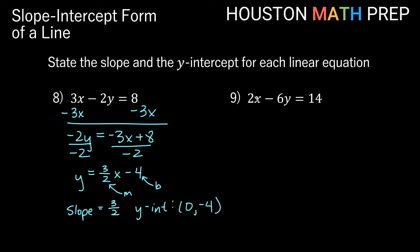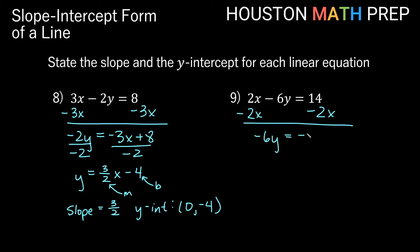For our last one: 2x minus 6y equals 14. Again, not in y equals mx plus b form, so we subtract 2x to the other side. That gives us an x term on the right: negative 6y equals negative 2x plus 14.